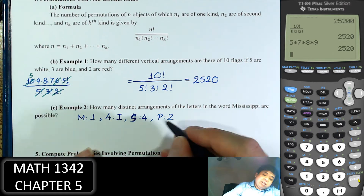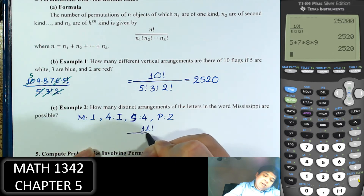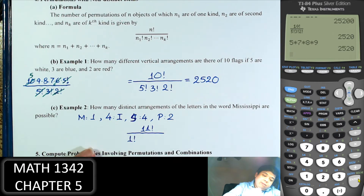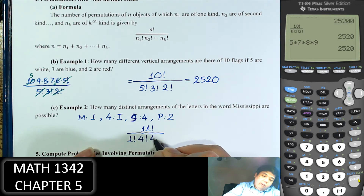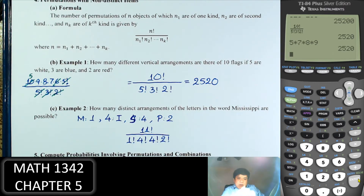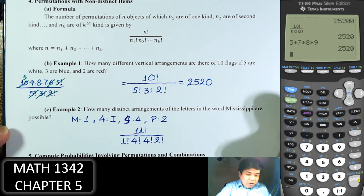To find the different ways to arrange these 11 letters: 11 factorial divided by 1 factorial times 4 factorial times 4 factorial times 2 factorial. That gives the answer.